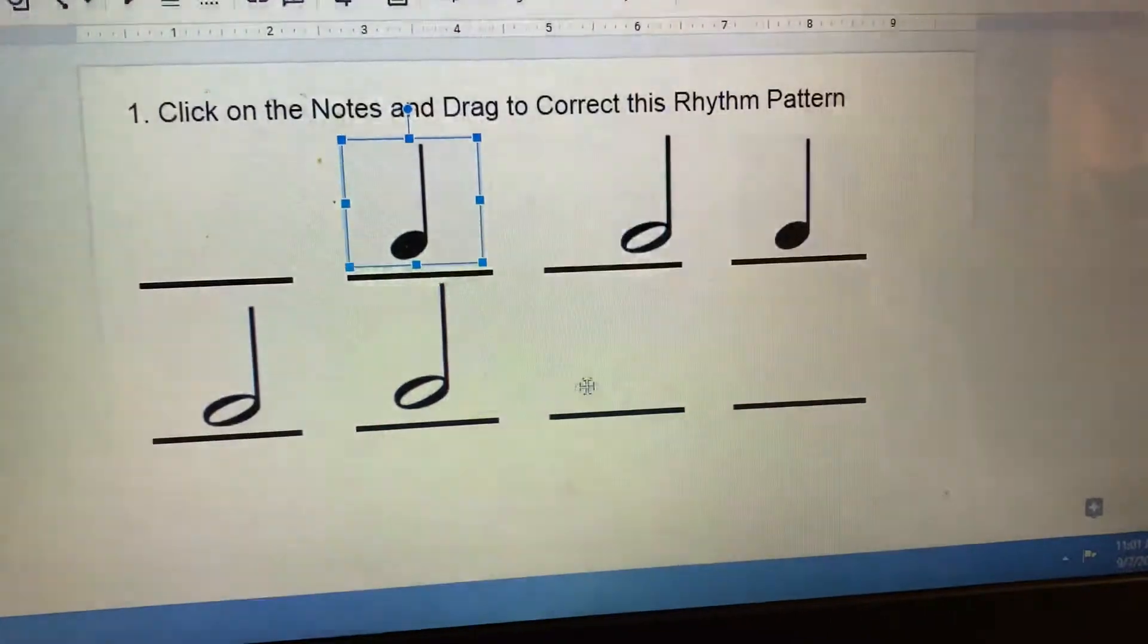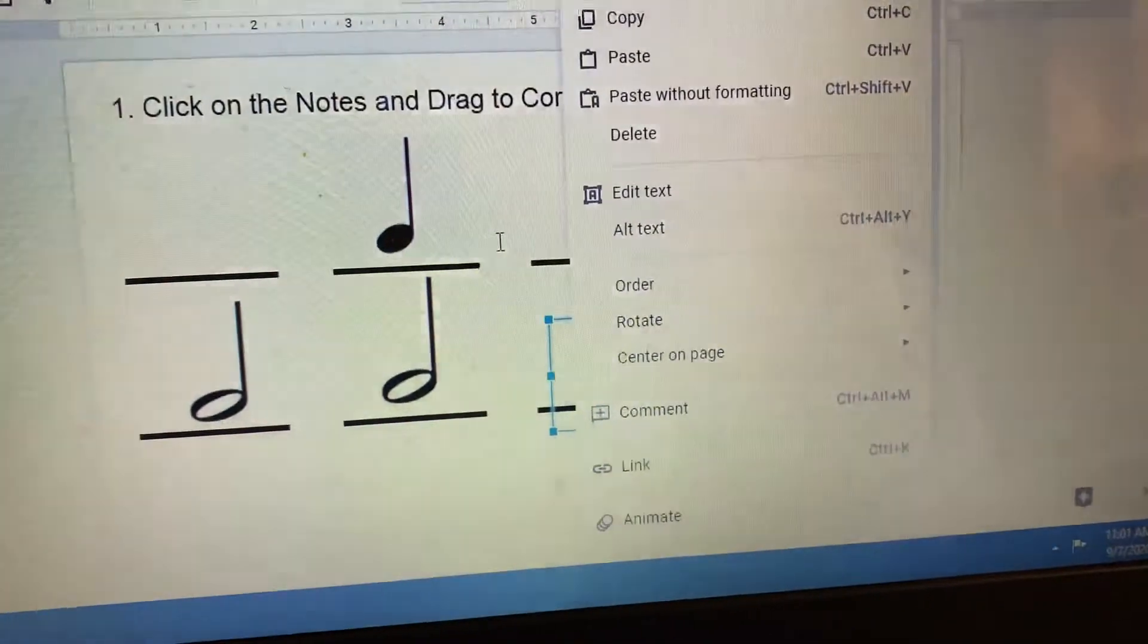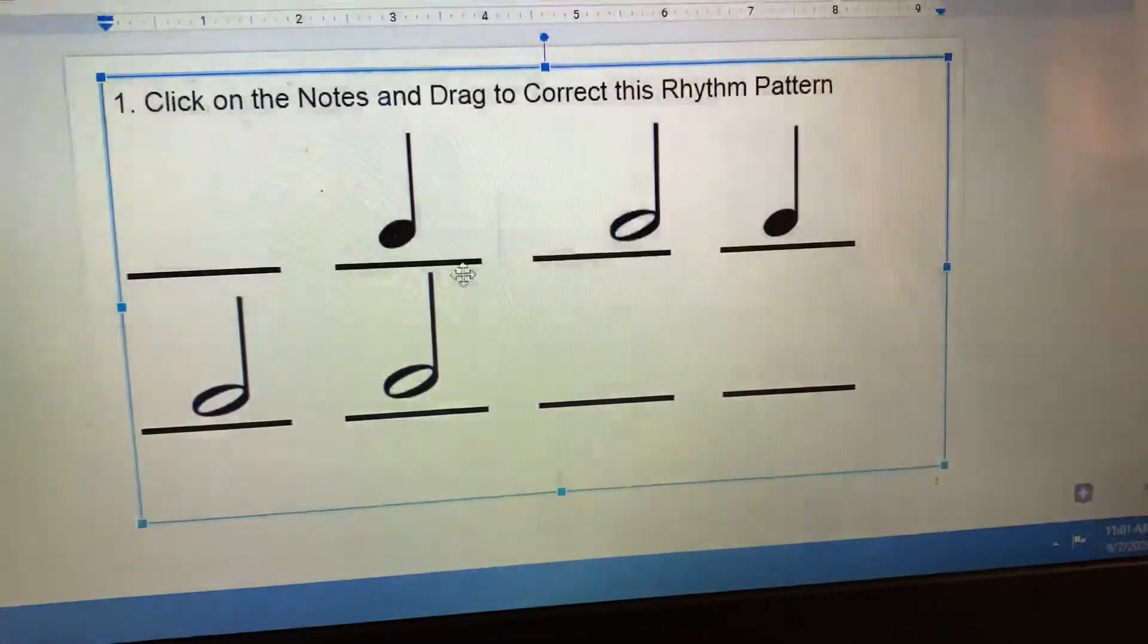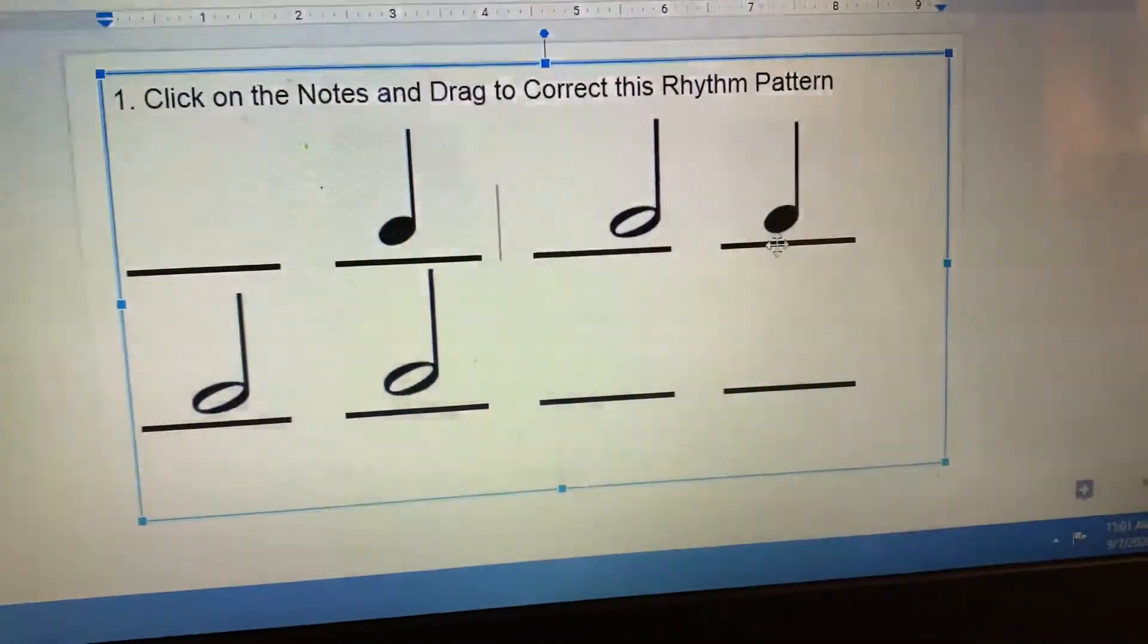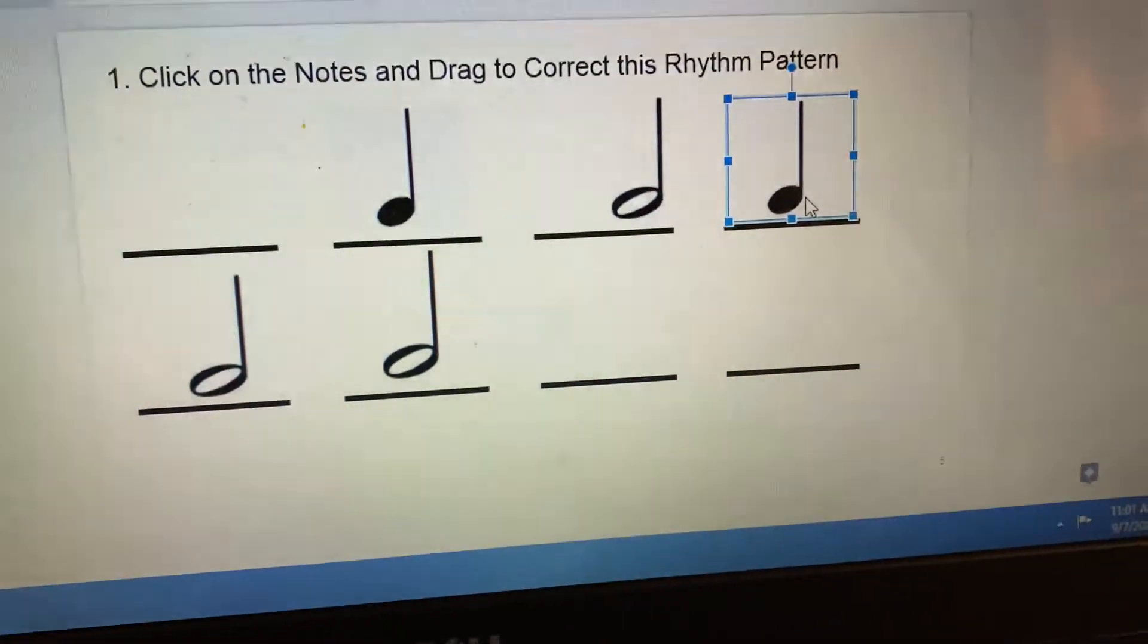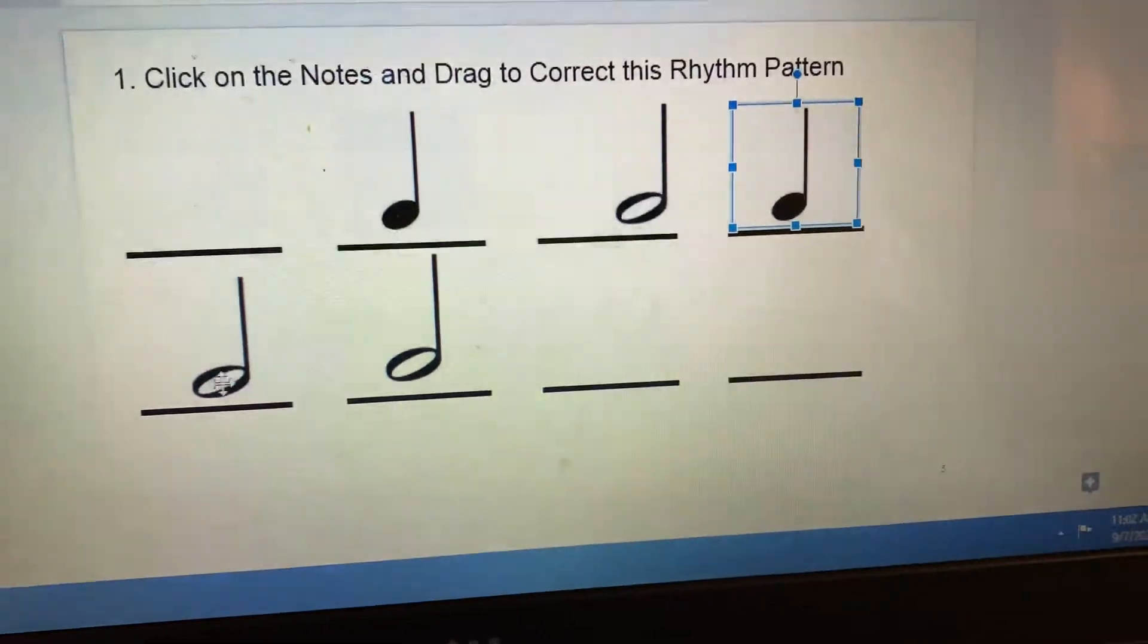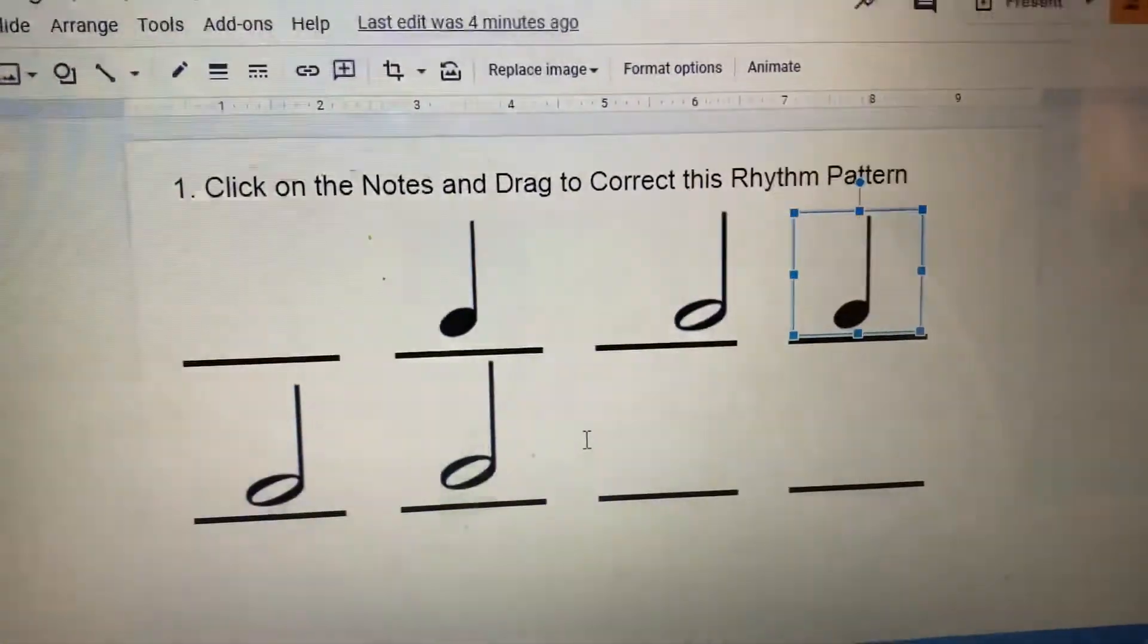One example may have a note crossing from the bottom to the top line. So you're going to click and drag the note wherever it goes. You'll click and drag whichever note in the top line needs to move. Click and drag whatever note in the bottom line needs to move.